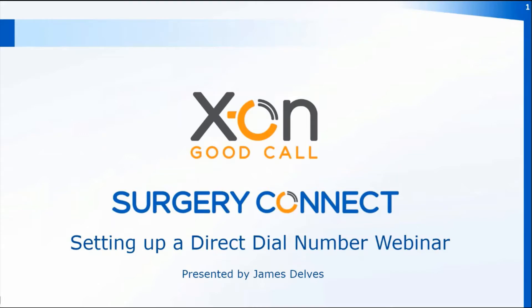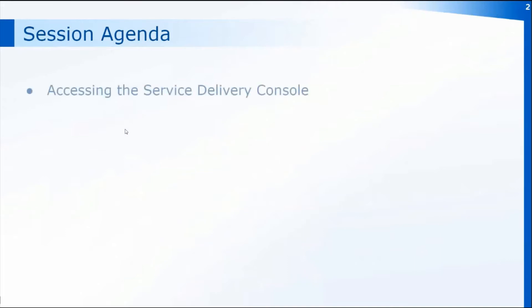Direct dial numbers can be set up for individual users or groups to allow calls to come straight through to them, no matter where they are working or which device they're using to receive those calls. During this session we're going to be looking at accessing the service delivery console, which is where we'll be setting up the call flow for the direct dial number.